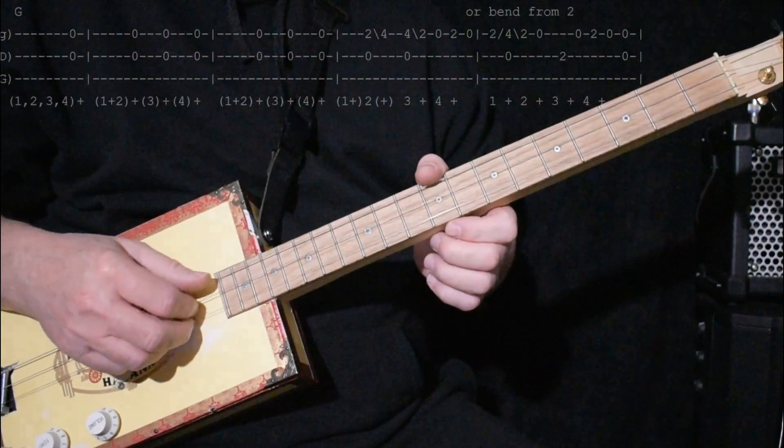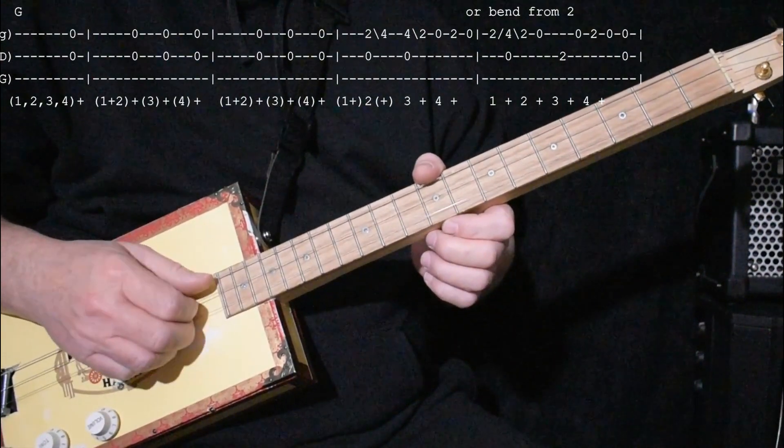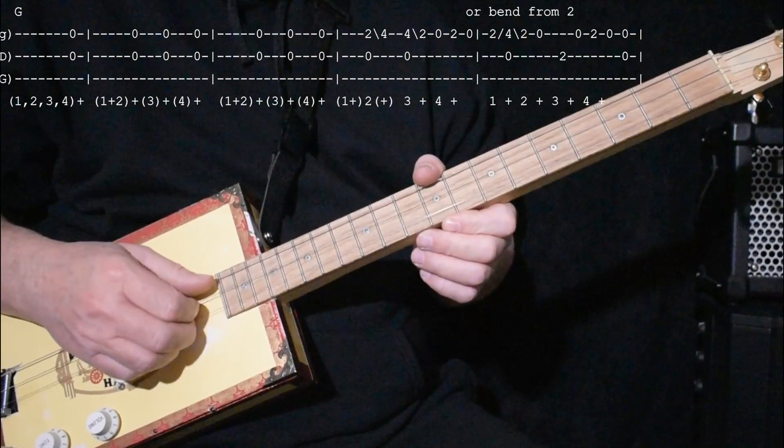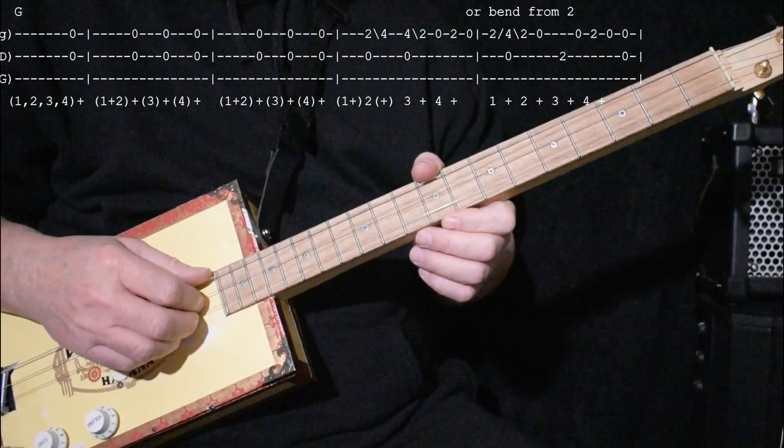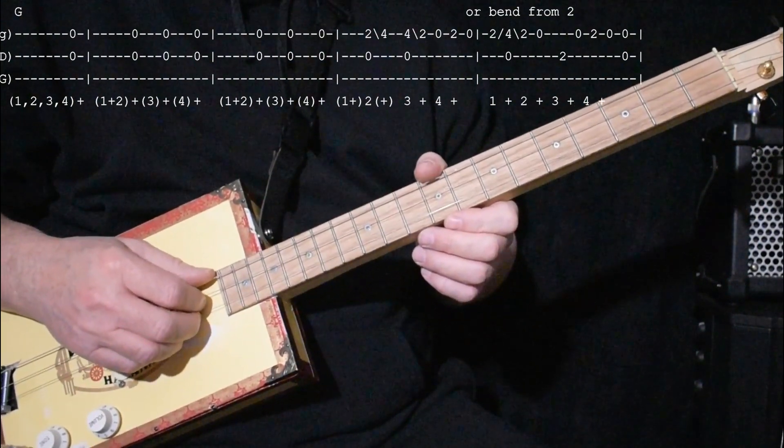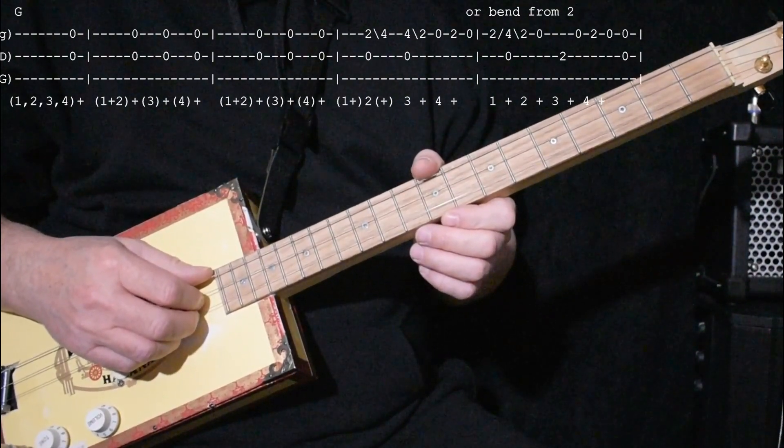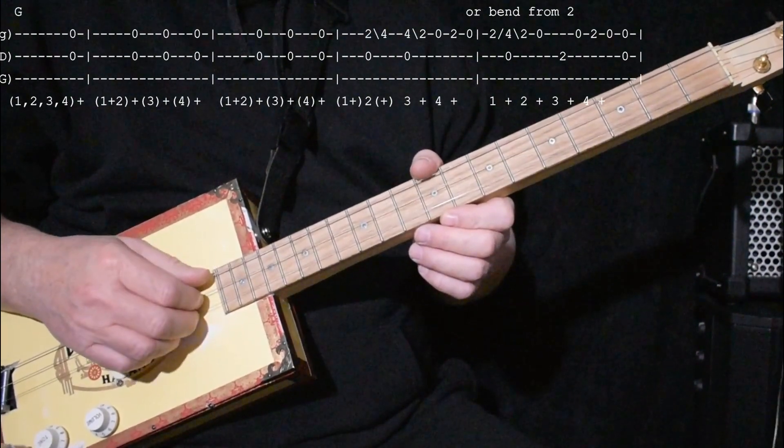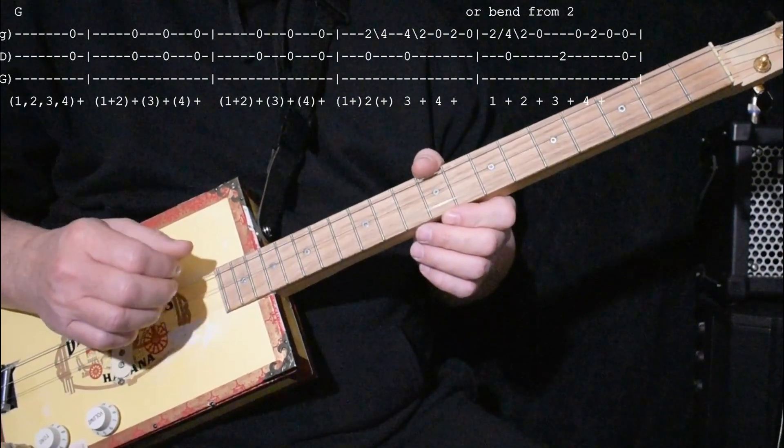It starts off with just these two strings, same two he's using. That's the first part. The only thing tricky about that is it's on the and. So it's one, two, three, four, and one, two, and three, and four, and like that.